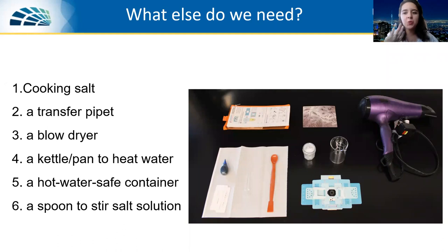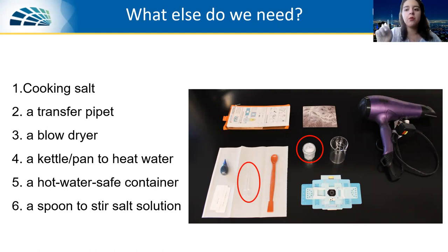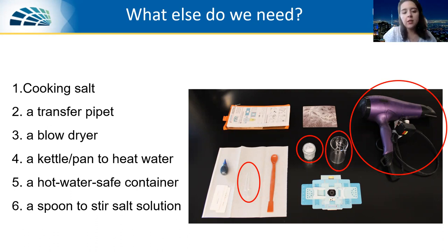What else do we need? We have our foldscope, so go ahead and try to assemble it. We are going to need salt — as shown in the image, we use some cooking salt. You'll also use the transfer pipettes provided in your kit for sample preparation. You can use a blow dryer if you have one at home, but if you don't, no worries — you can just let things dry naturally. You'll also need hot water, heated using a kettle or a pot, and make sure you have a safe container for working with hot water.